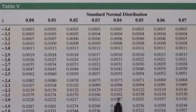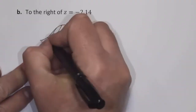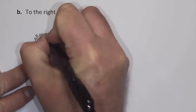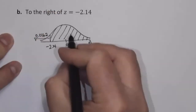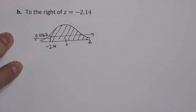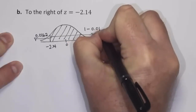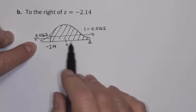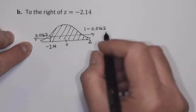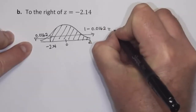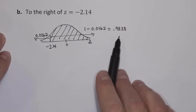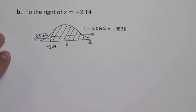That value of 0.0162 is the area to the left of negative 2.14. But I want the area to the right. The area to the right is 1 minus 0.0162, because the total area beneath the standard normal curve must equal 1. So if the area to the left is 0.0162, then the area to the right is 1 minus that, which equals 0.9838. So the area to the right of negative 2.14 is 0.9838.